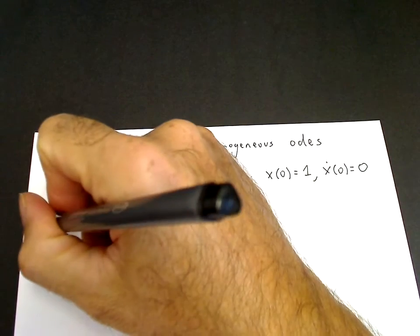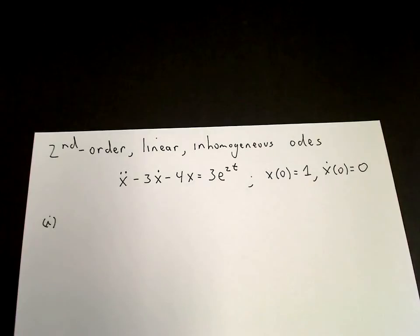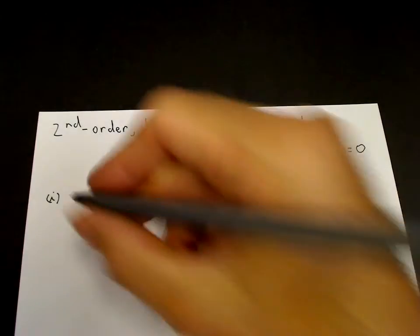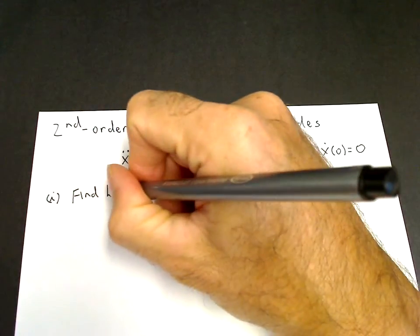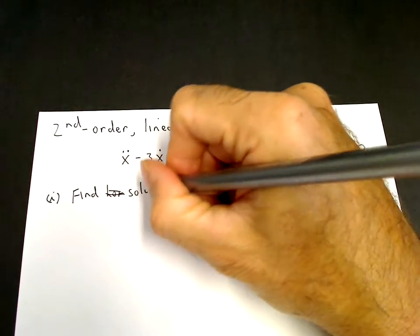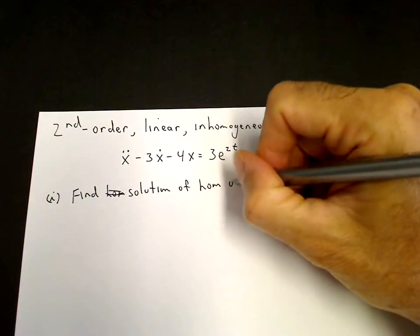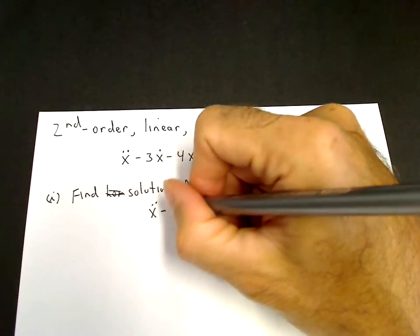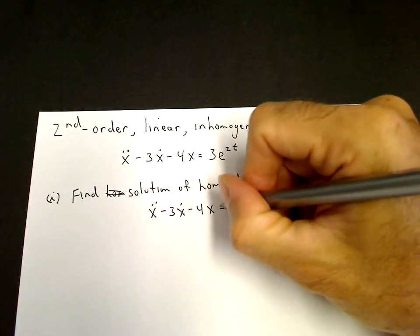There are three stages to finding the solution of a linear inhomogeneous equation. The first stage is to find the homogeneous solution — that is, find the solution of the homogeneous ODE. So we consider x double dot minus 3x dot minus 4x equals 0.